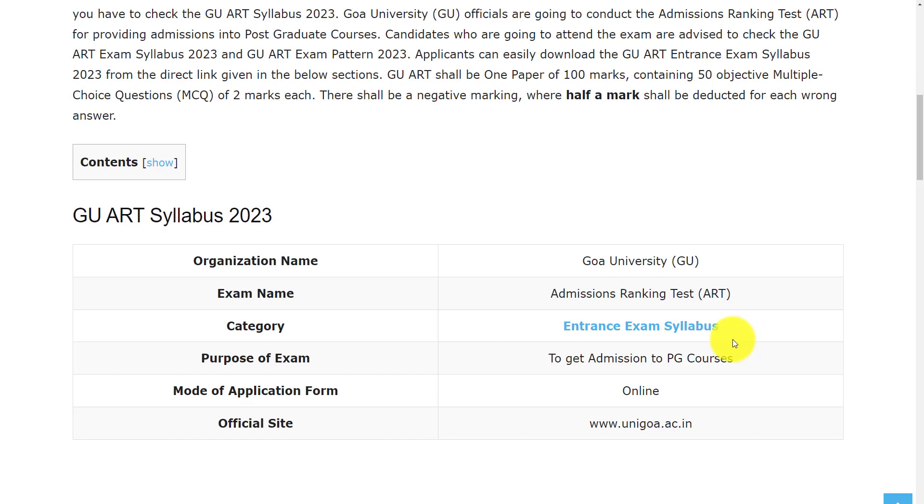Before going to the exam pattern and syllabus, let's see the overview of this examination. The organization conducting this exam is Goa University GU. The name of the examination is Admissions Ranking Test ART. The purpose of this examination is to get admission to PZ courses in Goa University. The mode of application is online. If you have any queries, you can go through the official website www.unigoa.ac.in.